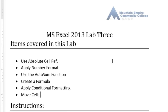If you look at the items covered in this lab, we should be able to learn the difference between absolute reference and relative reference. We'll also discuss how to apply number format to cells, how to use the AutoSum function — we already did that in the past two labs but will look at it again — and we'll create our own formula. We'll also use conditional formatting and how to move cells inside Microsoft Excel.